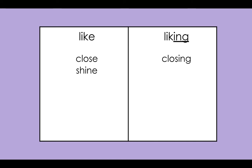Our next word is "shining." Where would the word "shining" go? You're right — "shining" would go on this side. Think about what the word "shining" needs to look like. Write the word "shining." Say it slow and smooth to hear all the parts. Check it — make sure your word looks like my word. Do you see how we drop the E when we're adding an ending that begins with a vowel such as "-ing"? The I in "-ing" is a vowel, so I need to drop the E when I'm adding that ending. Shining.